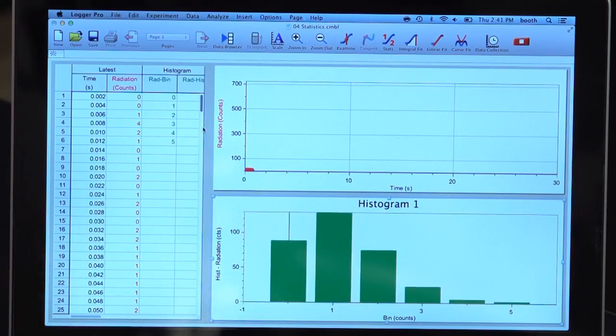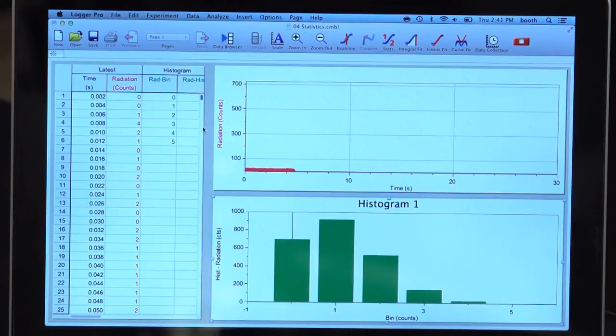I've already done some setup in Logger Pro. I'll go through how that setup is done in just a little bit. I have chosen a count interval so that, on average, only one or two decays are captured during any single count interval. And if I take data, I see two graphs.